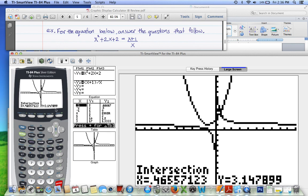And y is 3.147899. But again, there is no y in this equation, just an x. Therefore, our solution is the x value, which is 0.466.